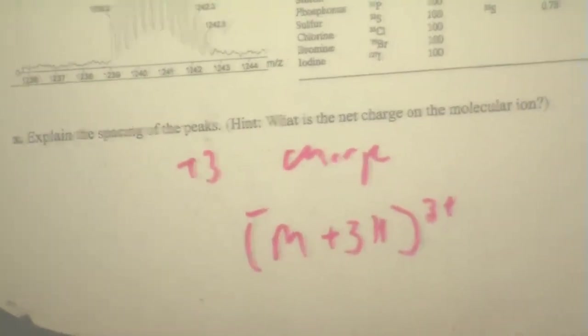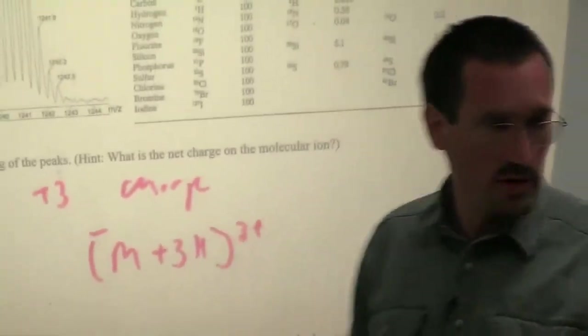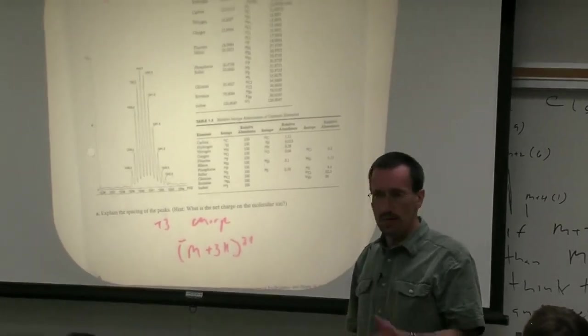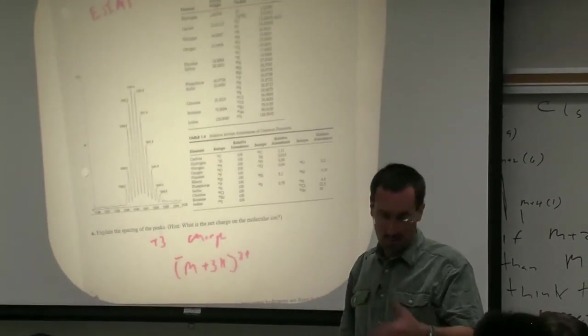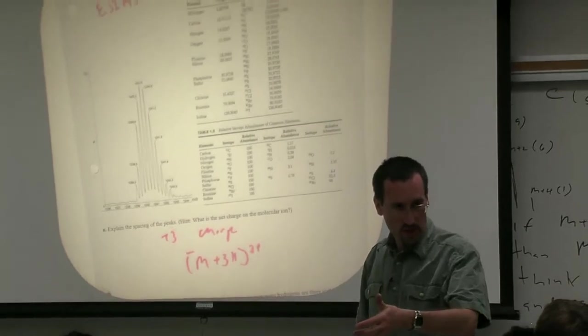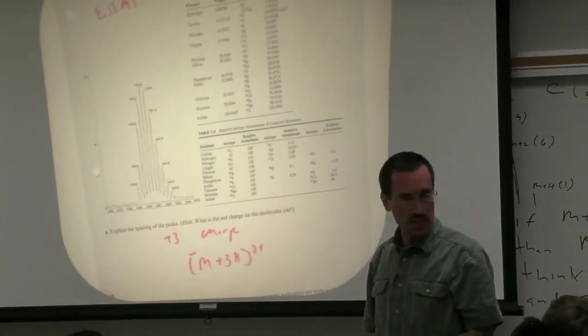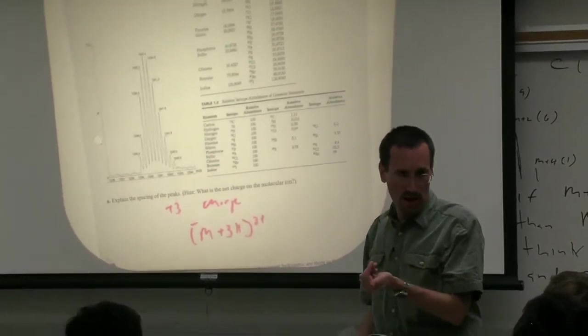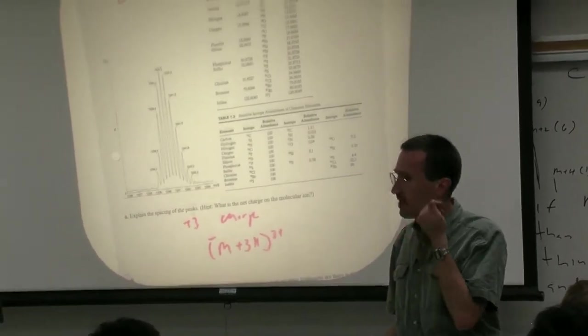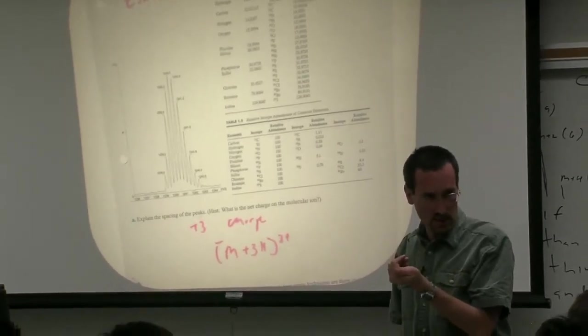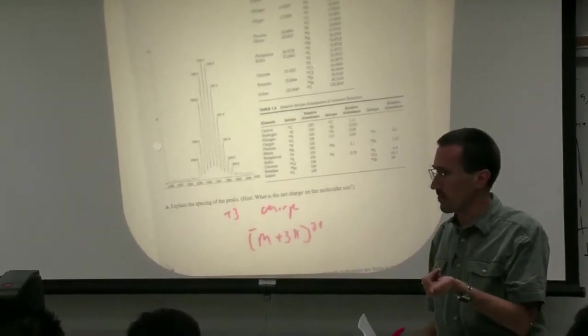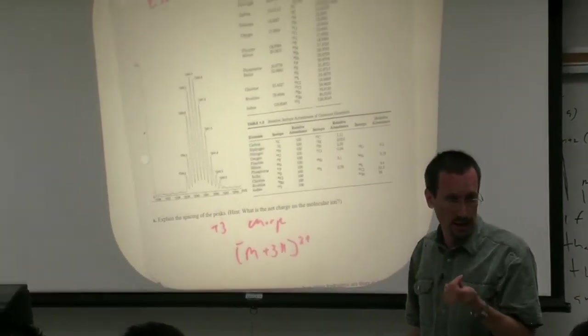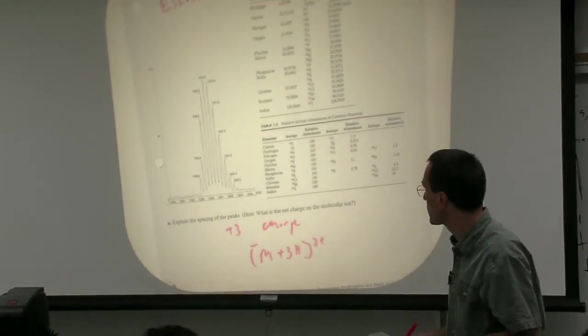There's a lot of C13. By the time you get up to compounds that have about 100 carbon atoms, the M plus 1 peak is going to be as big or bigger as you get beyond 100 than the M peak. The odds of having a molecule with one C13 or two C13s is higher than the odds of having a molecule with no C13s.